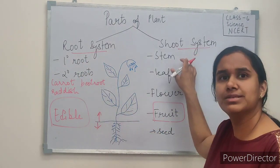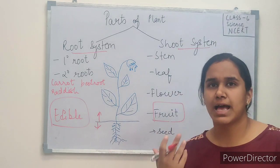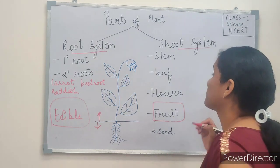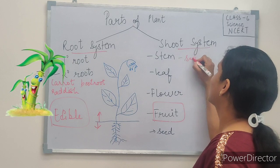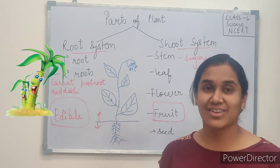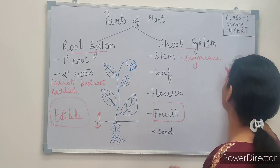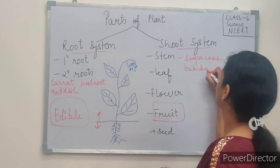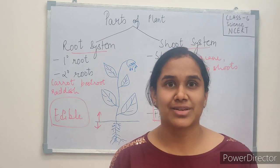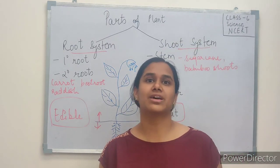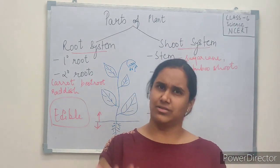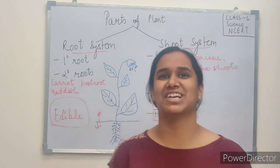Coming to the shoot system — the stem. Can you think of any example of a stem which is edible? Sugarcane is one! Apart from this, we have bamboo shoots, asparagus, and celery. All these are examples of edible stems. If you can think of any other examples, leave them in the comment section.